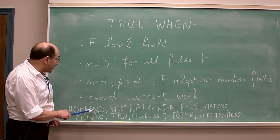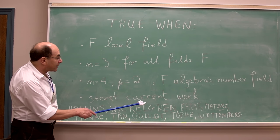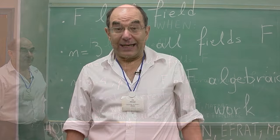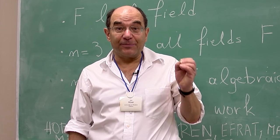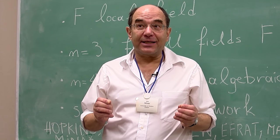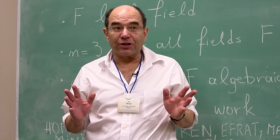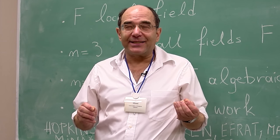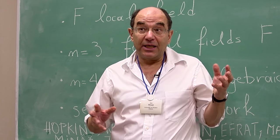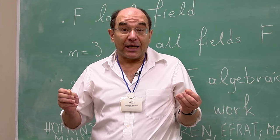And you can see the details of this work by Hopkins looking at the paper, Hopkins-Wickelgren, Efrat-Matzri-Minac, Guillot, Topaz-Wittenberg. I consider it a very exciting and possibly really deep conjecture in Galois cohomology. It has a number of very interesting consequences for structure of maximal pro-p quotients of absolute Galois groups. There is also a fascinating connection with pro-p Bloch-Kato conjecture, with gerbes cohomology, with rational homotopy, with representation of Galois groups in number theory. So for all these reasons, I found this conjecture very, very exciting and interesting.